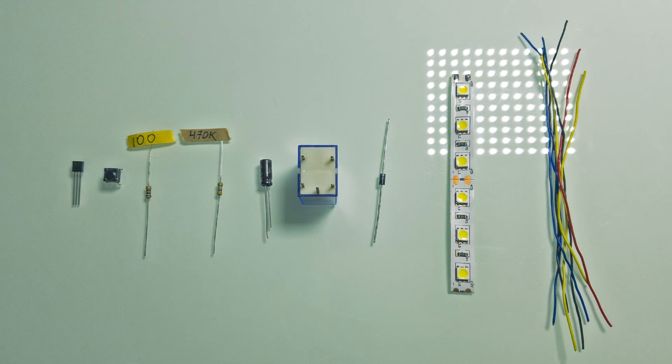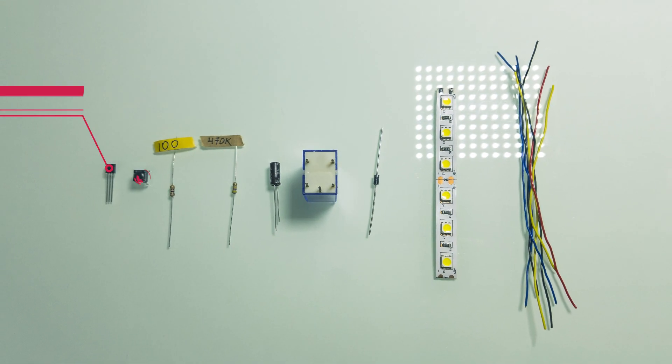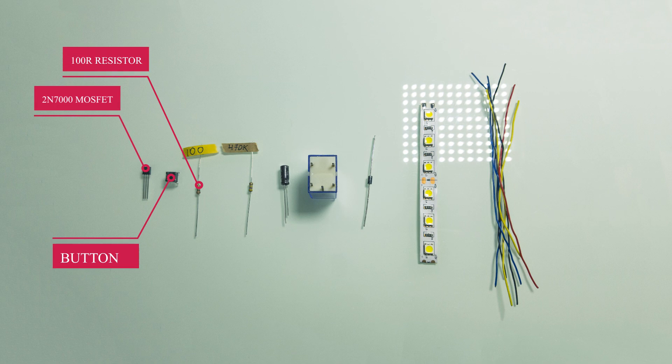2N7000 MOSFET, a button, 100 ohms resistor, 470 kOhm resistor